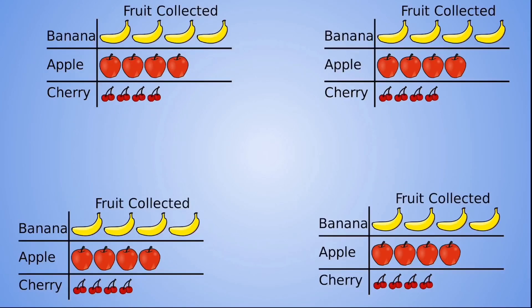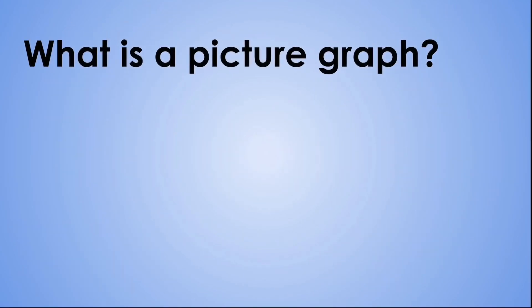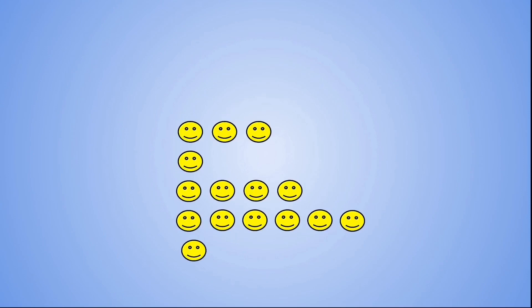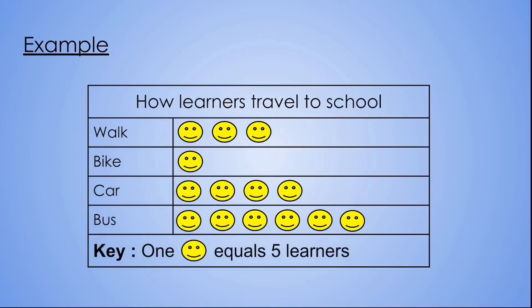For this lesson, we're going to focus on one particular type of graph and that is the picture graph. Now what is a picture graph? A picture graph is a graph that uses pictures or symbols to show, compare or count information. Now let's take a look at an example of a picture graph and let's see what makes up a picture graph.